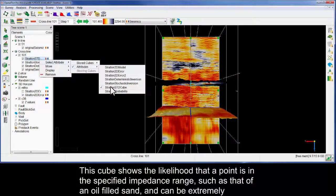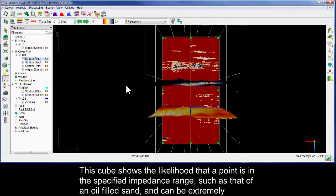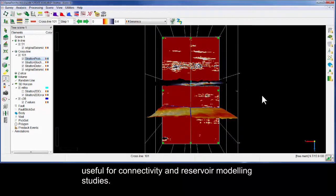This cube shows the likelihood that a point is in the specified impedance range, such as that of an oil-filled sand, and can be extremely useful for connectivity and reservoir modelling studies.